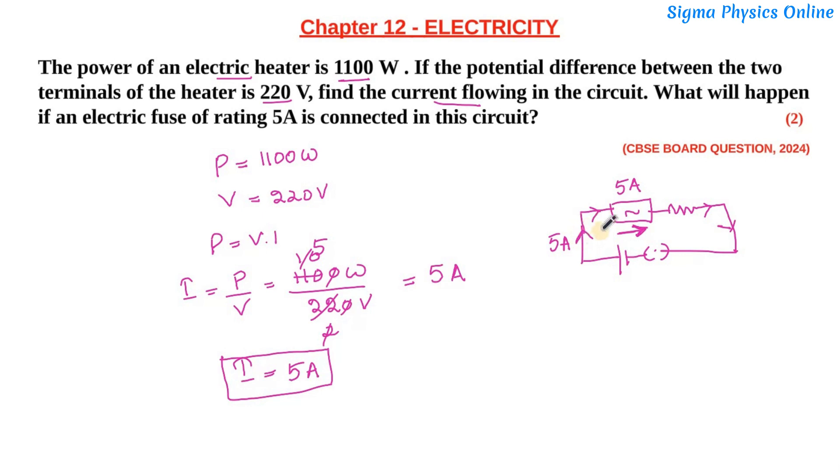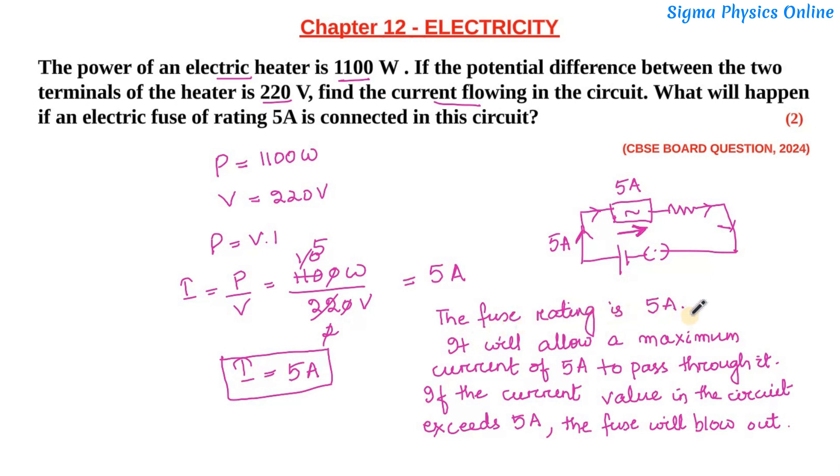So we can write this answer as: the fuse rating is 5 ampere. It will allow a maximum current of 5 ampere to pass through it. If the current value in the circuit exceeds 5 ampere, this fuse will blow out. So this should be the answer to this question.